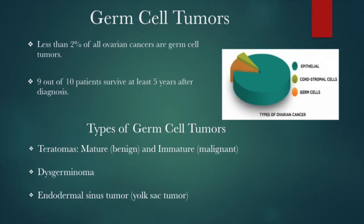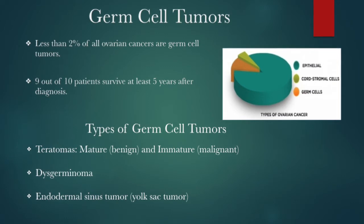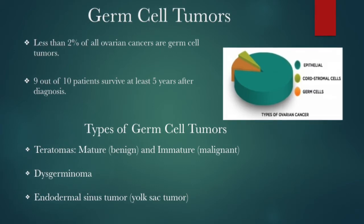Ovarian germ cell tumors form in the ova. Less than 2% of all ovarian cancers are germ cell tumors. This type has an overall good prognosis with 9 out of 10 patients surviving at least 5 years after diagnosis. There are several subtypes of germ cell tumors: teratomas, dysgerminomas, endodermal sinus tumors, and choriocarcinomas. These tumors can also be a mix of more than one subtype.